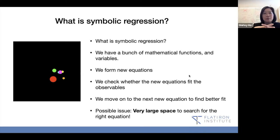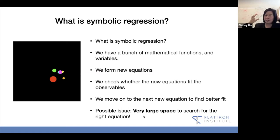Right now, the algorithm doesn't pick very smartly. You can probably pick smartly how you will form the next equation. We check whether the new equation fits the observables, it makes the projections and whether it fits the observables. Then we move on to the next new equation to find better fit. The possible issue here for symbolic regression is that it's a large search space for all the mathematical functions and variables you can put together, like sciences, simple sciences, exponentials, all that.